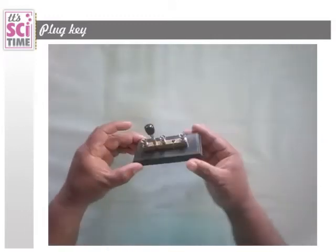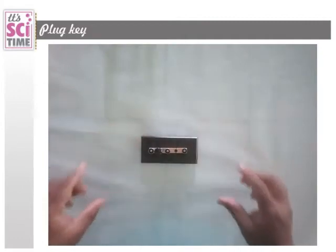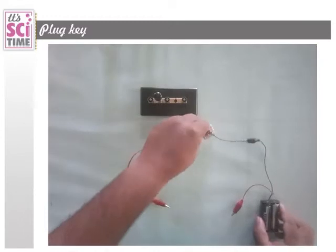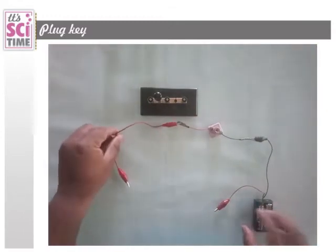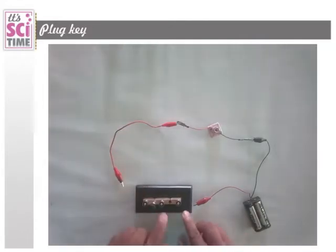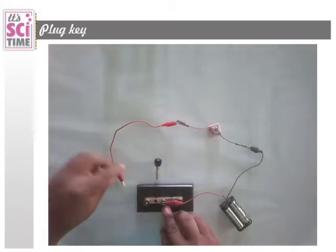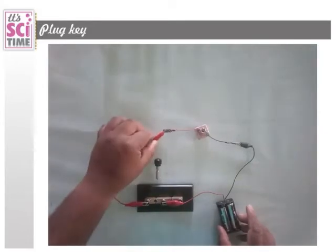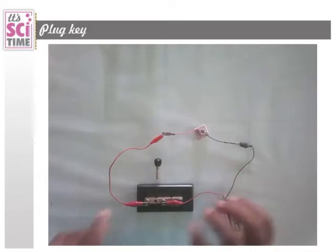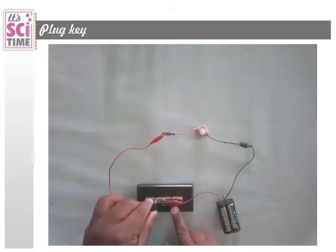This switch is called a plug key or plug switch. There is a plug we attach to it. Using the same circuit as before: when we connect the two terminals the bulb should light up. The plug switch has two terminals. With the plug removed the bulb stays off. When we insert the plug the bulb switches on. The plug key permanently switches the circuit on and off — that is how this switch works.